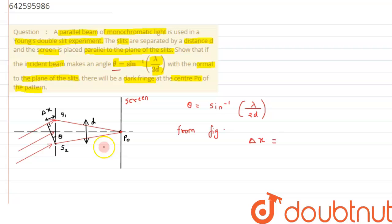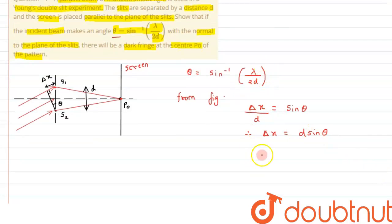In this triangle we can say sine theta value will be equal to opposite upon hypotenuse, so opposite is Δx and hypotenuse is d. This is the value of sine theta. Therefore from here we can say the value of path difference, that is Δx, comes out to be d sine theta.